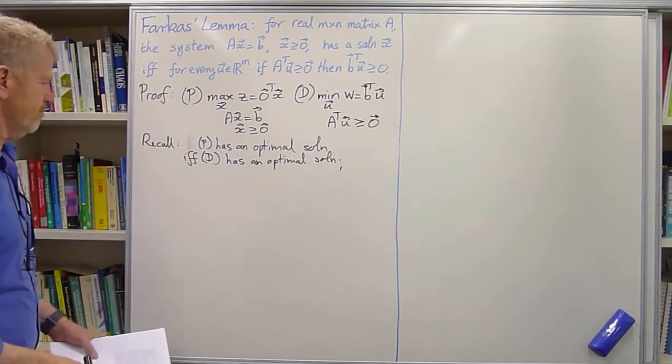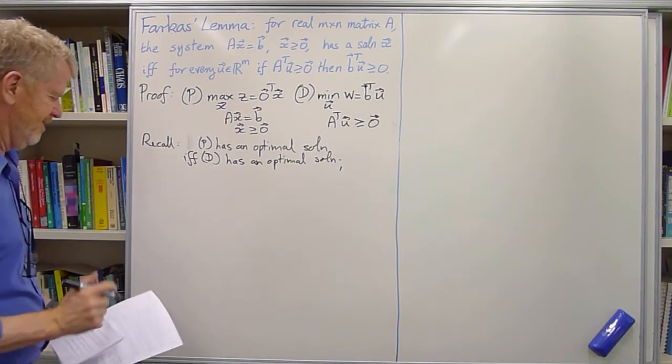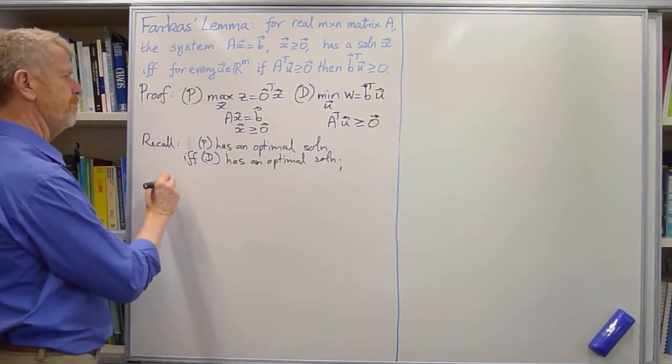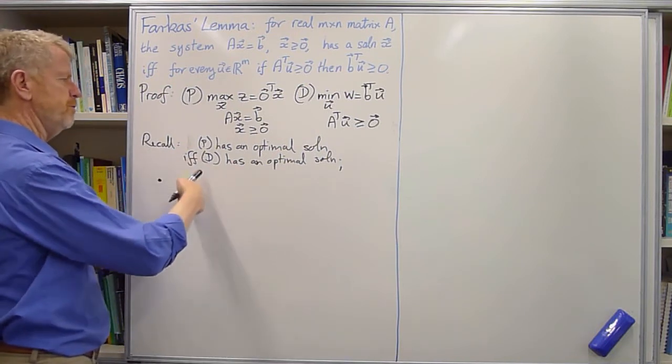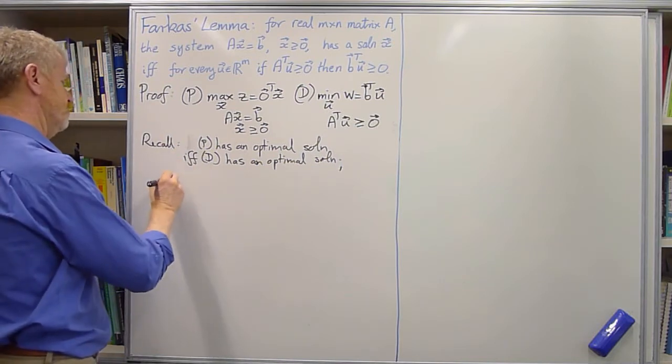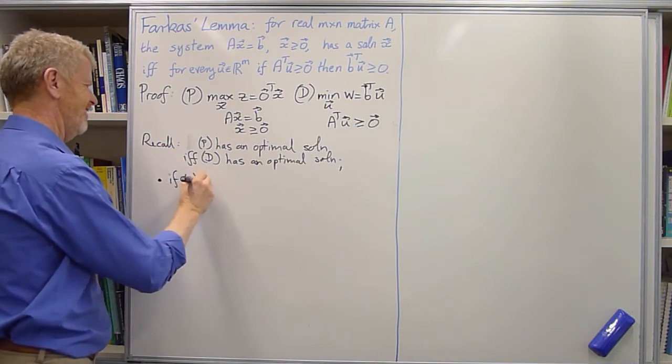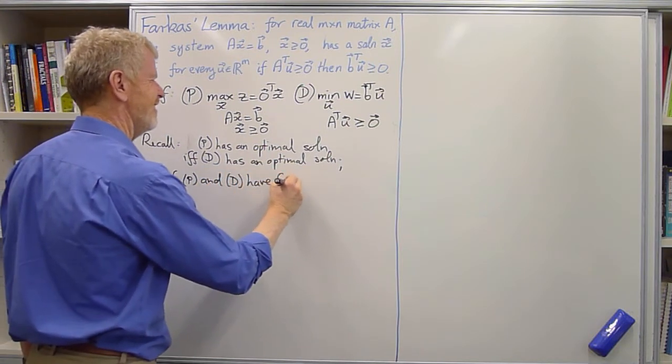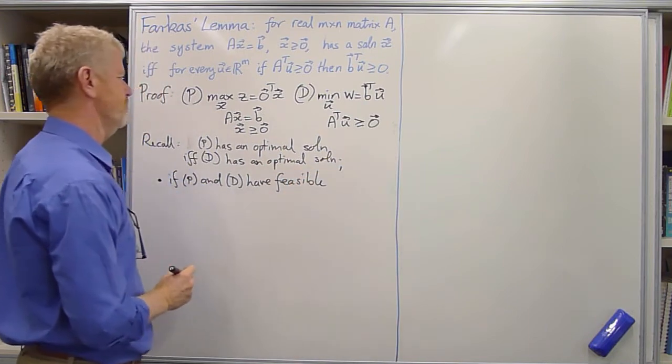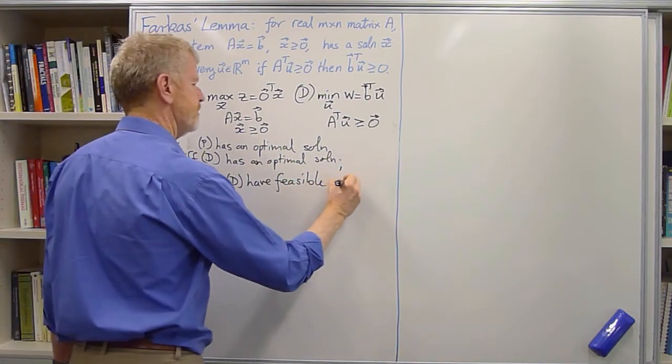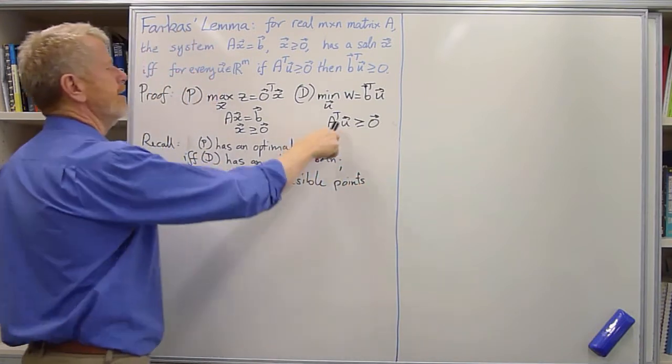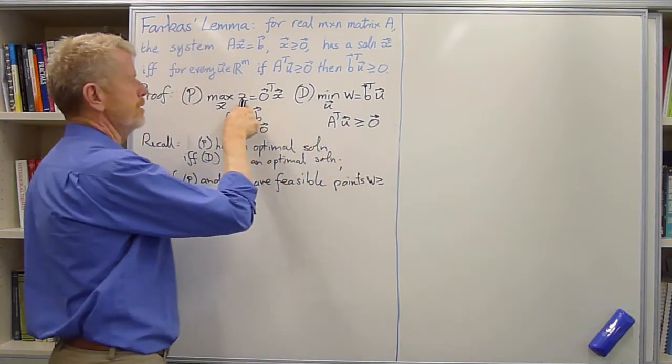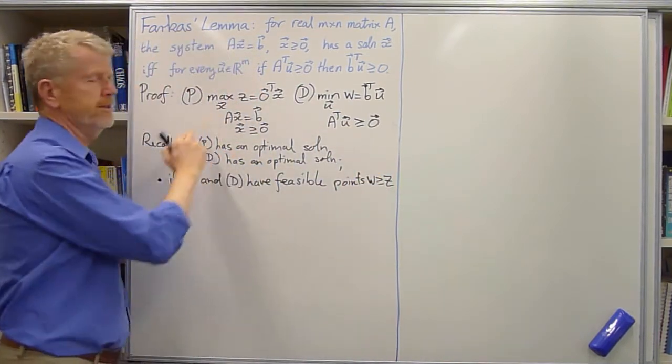And the second property that we will use is that for all feasible points in the primal and the dual, for all of those feasible points, the objective W in the dual is bigger than or equal to the objective Z in the primal.